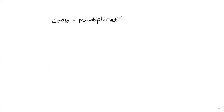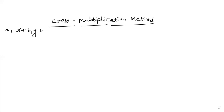Now, the cross multiplication method is very important — typically one question comes specifically asking for this method. We already know the general form: a1x + b1y + c1 = 0 and a2x + b2y + c2 = 0. The first thing to do is bring everything to one side in general form, then identify the six values: a1, b1, c1, a2, b2, c2.